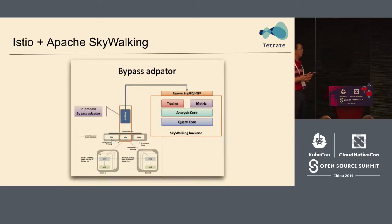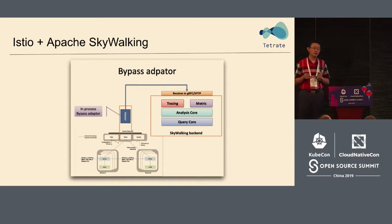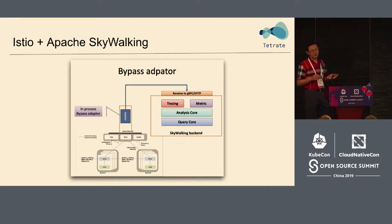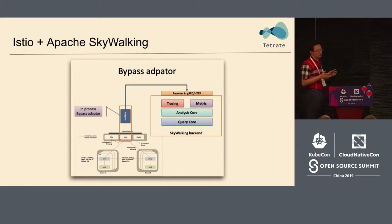Whether it is tracing, metrics, or topology, there are many producers. By the end of last year and beginning of this year, if you wanted to propose an adapter in the open source community — whether an in-process adapter or mix adapter — the Istio team made it clear they want you to achieve a bypass adapter. SkyWalking is the only one in the open source community that can achieve the bypass adapter.